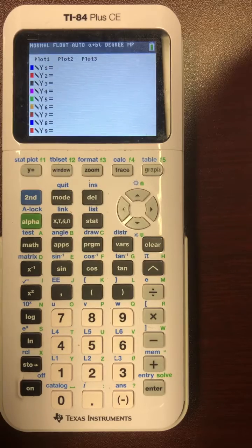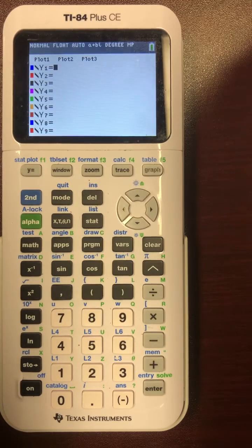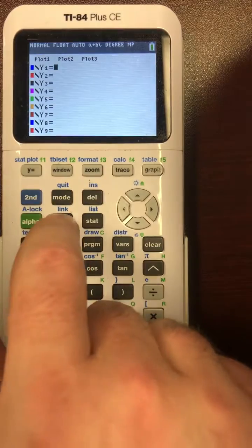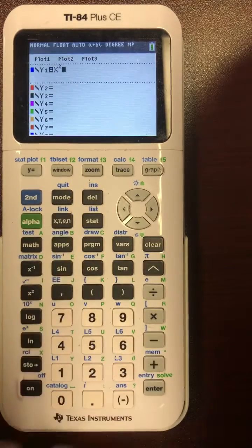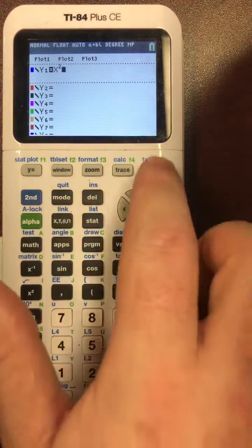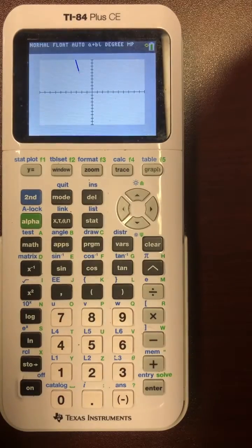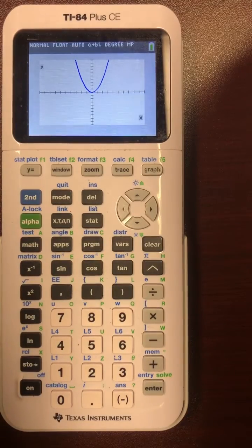Now think of the most standard graph of y equals x squared. So if we want to graph that we can have y equals x squared. Then we hit graph and you wait and it draws it and that's great.